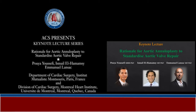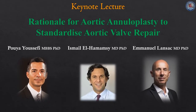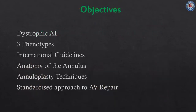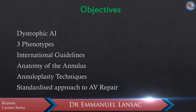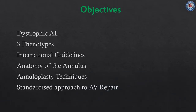Welcome to our keynote lecture on the rationale for aortic annuloplasty to standardize aortic valve repair. In this talk we will delve into the pathological process of dystrophic aortic insufficiency, defining its characteristics and classifying the three aortic phenotypes which make up the spectrum of dystrophic AI. We will look at the repairability of these valves and what our international guidelines recommend in terms of management. Before taking a deep dive into the techniques of annuloplasty, we will review the recent findings in the anatomy of the annulus. We will discuss the two most commonly used techniques of valve-sparing root replacement, namely the remodeling and re-implantation techniques, comparing their advantages and disadvantages, and we will then take a close look at our standardized approach to aortic valve and root repair for each of the three phenotypes of dystrophic AI.